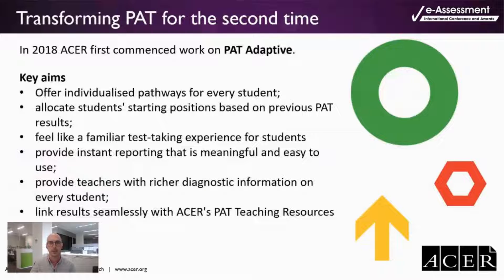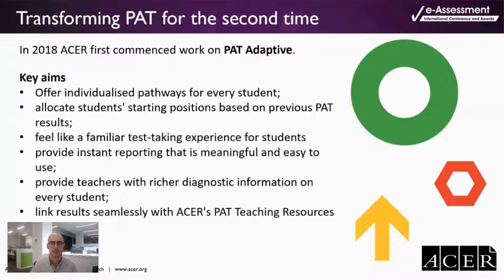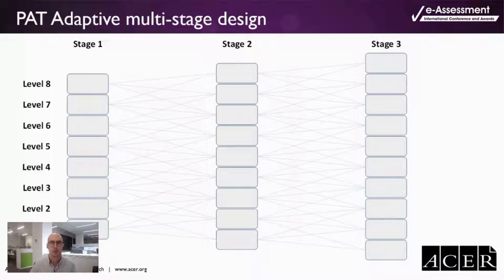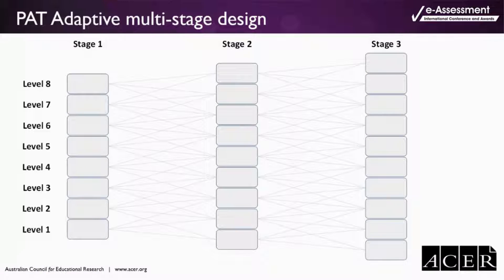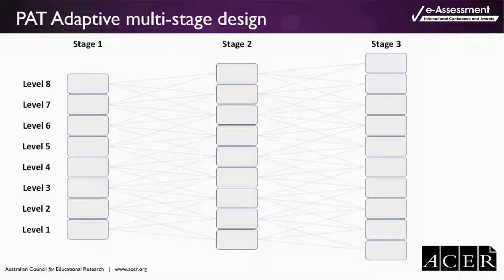Students can be automatically assigned appropriate entry levels based on previous test results, reducing the reliance on generic year or age-based entry levels and completely removing the need for educators to manually assign tests to students. In combination with the inclusion of parallel test content at every stage, PAT Adaptive's branching rules provide 768 possible unique pathways through the assessment, a radical shift from the traditional 10-year-level based linear booklets.